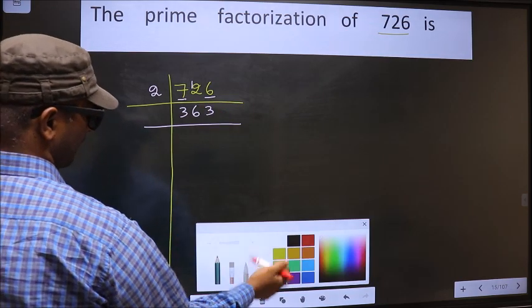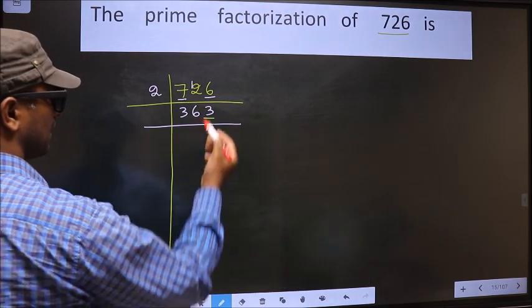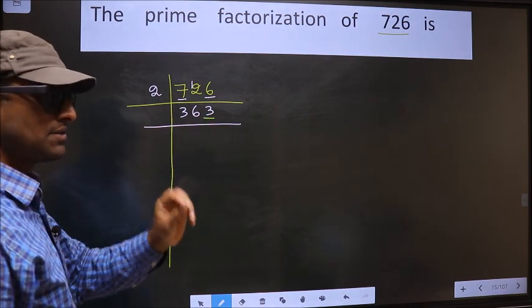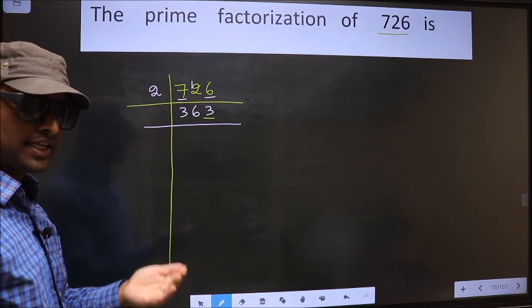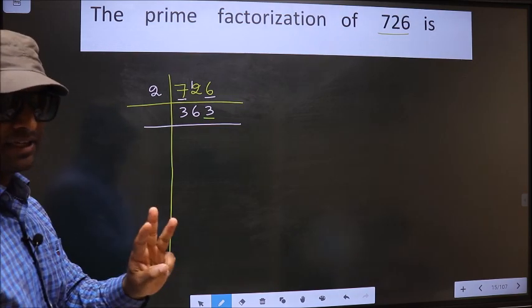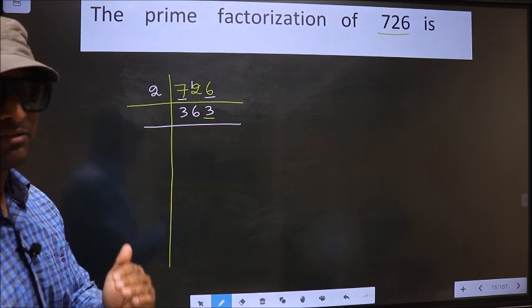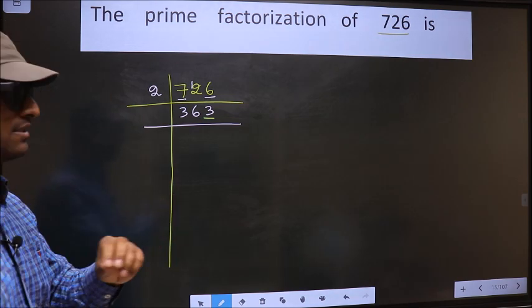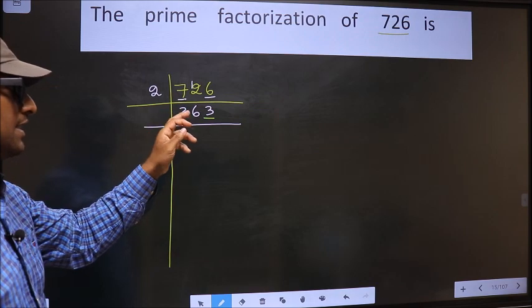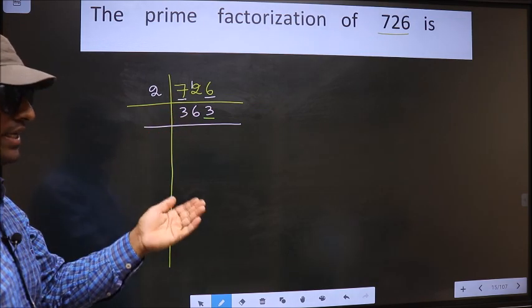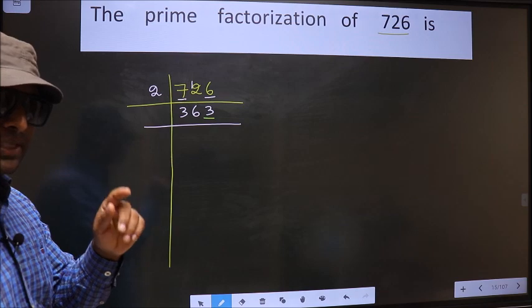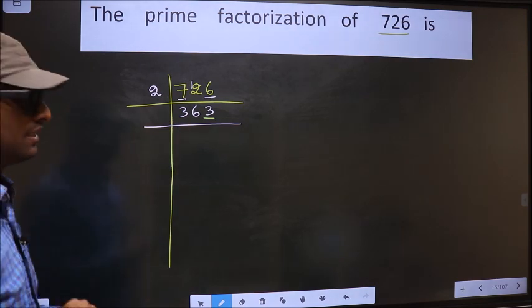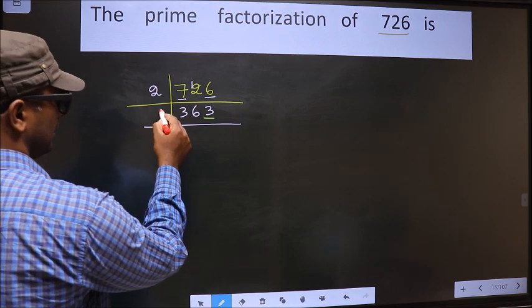Now for this number, the last digit 3 is not even, so this number is not divisible by 2. Next prime number is 3. To check divisibility by 3, we should add the digits: 3 plus 6 plus 3. We get 12. Is 12 divisible by 3? Yes. So this number is also divisible by 3. So we take 3 here.